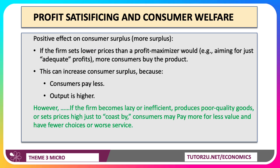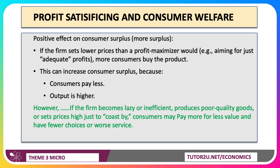Profit satisficing does have a consequence for consumer surplus. Typically, satisficers set a lower price than a profit maximiser, aiming to make an adequate, sufficient, satisfactory return. Lower prices normally means an extension down the demand curve, which increases consumer surplus because consumers pay less and they buy more.